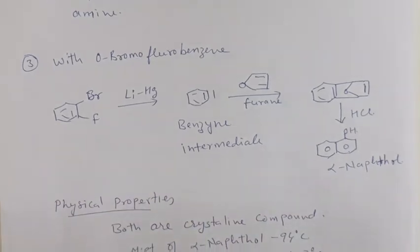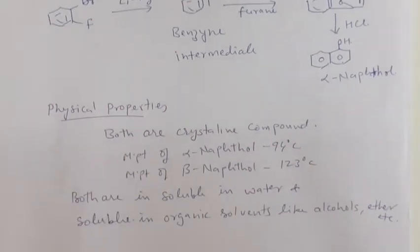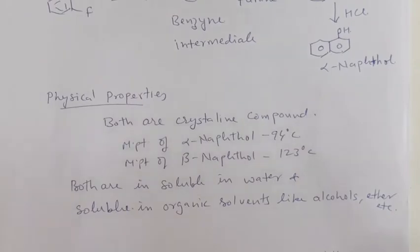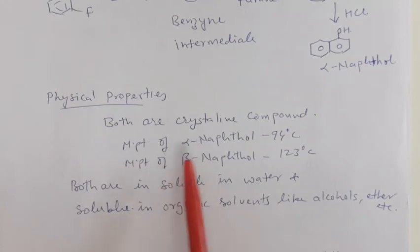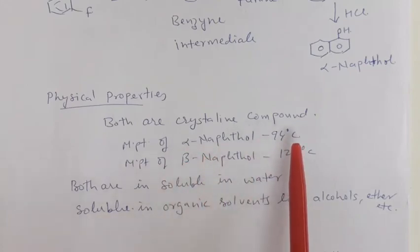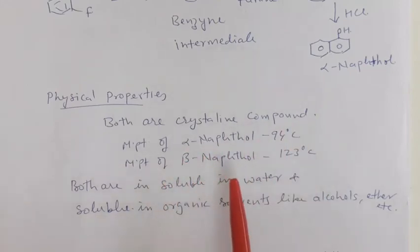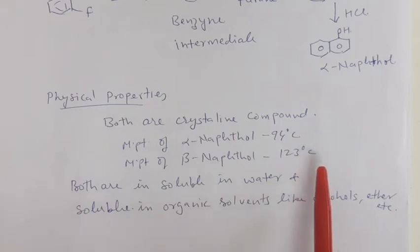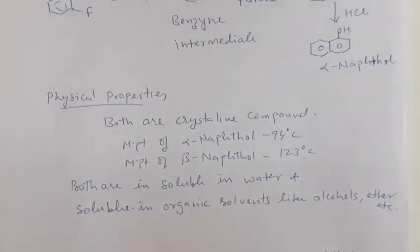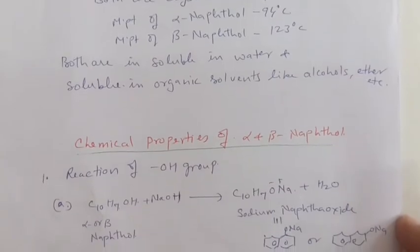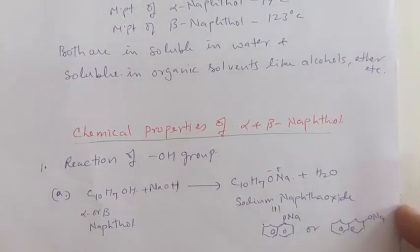So these are the syntheses of alpha and beta naphthol. As for physical properties, they are both crystalline solids. They have different melting points: alpha naphthol melts at 94 degree centigrade and beta naphthol at 123 degree centigrade. Both are insoluble in water but soluble in organic solvents like alcohol, ether, etc.